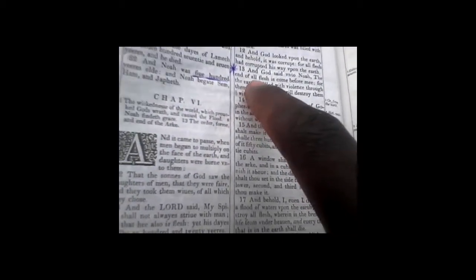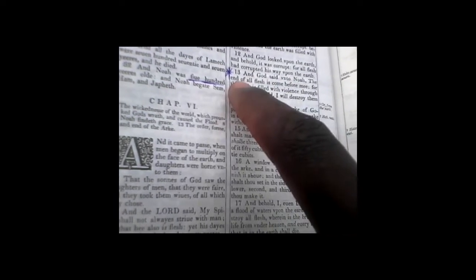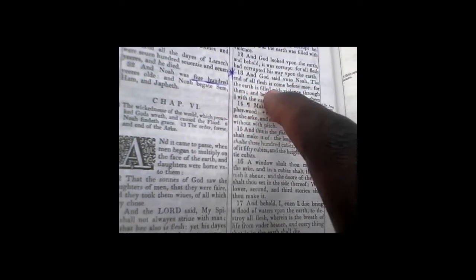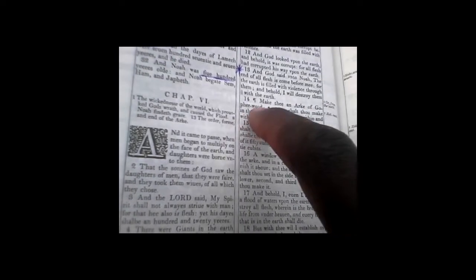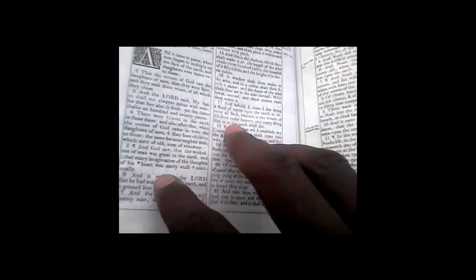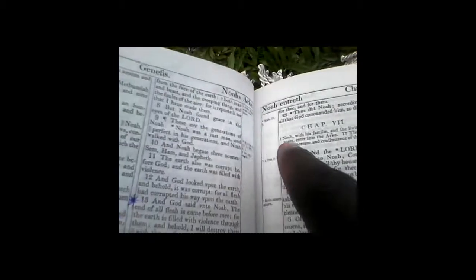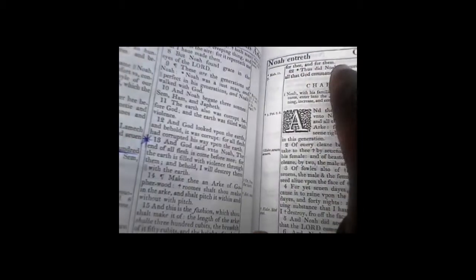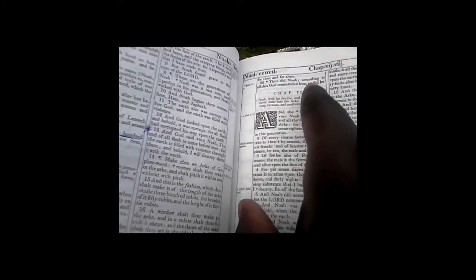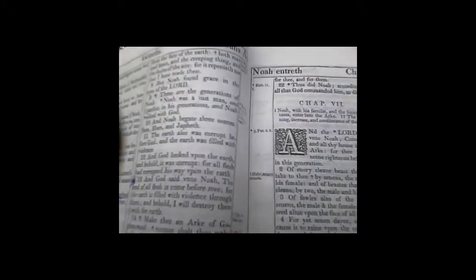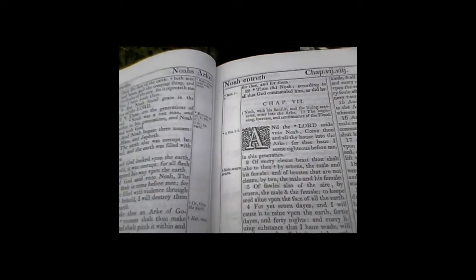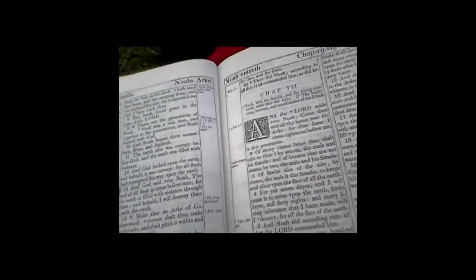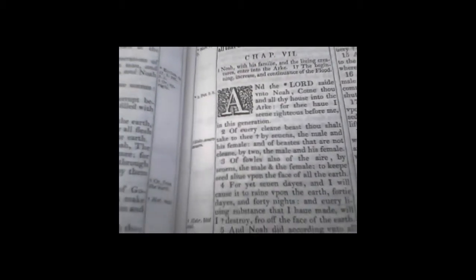Verse 13: And God said unto Noah, the end of all flesh is come before me, for the earth is filled with violence through them. Behold, I will destroy them with the earth. Make thee an ark of gopher wood. Verse 22 says thus did Noah according to all that Yehowah commanded him. So Noah didn't question Yehowah.